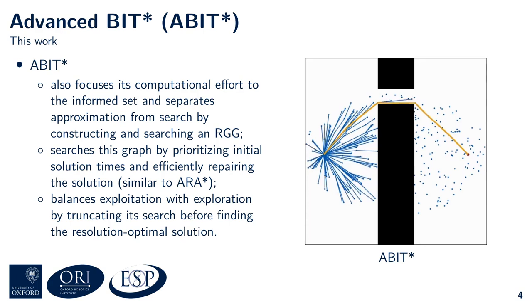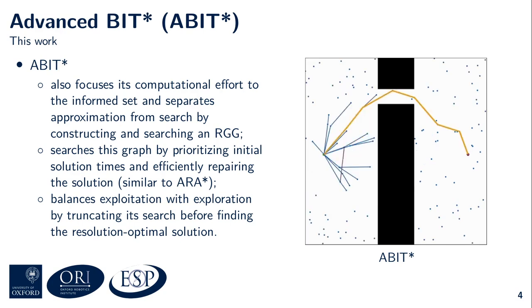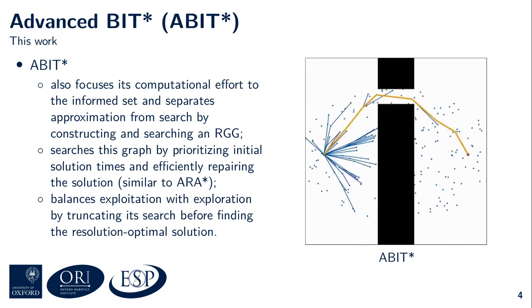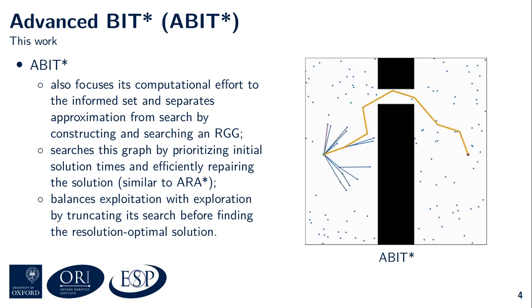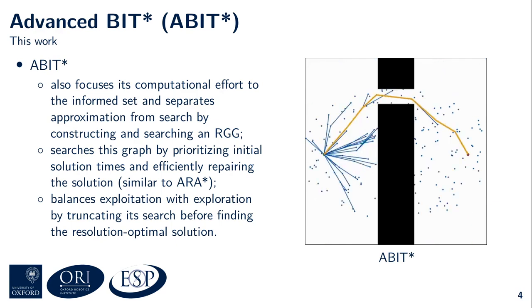A-BIT* often finds an initial solution faster than BIT*. The price for this is that A-BIT* would often have to expand more states than BIT* if it wanted to guarantee that it has found the resolution-optimal solution. But notice that in the context of path planning on random geometric graphs, resolution optimality is not practically meaningful, as it doesn't say much about the quality of the path in the continuous sense of the state space. A-BIT* can sometimes actually find the resolution-optimal solution faster than BIT*; it is just less efficient in guaranteeing that this is in fact the resolution-optimal solution. But again, this guarantee is not practically meaningful in this context.